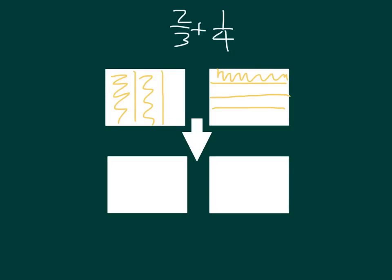So this here is 2 thirds, and this here is 1 fourth. We need to be able to create like units to be able to add these together. So we had our model — looking at 2 thirds first, where we divided it vertically to get thirds. Then we divided it horizontally into 4 parts.